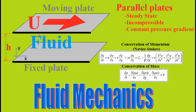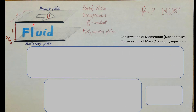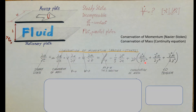The flow is incompressible and at steady state conditions. They also tell us the pressure gradient in the x-direction is a constant. To get started, we know we need to take into consideration our conservation equations — namely the conservation of momentum, otherwise known as Navier-Stokes, and conservation of mass. Since the flow is going in the x-direction, I'm going to write up the x-component of the Navier-Stokes equation.